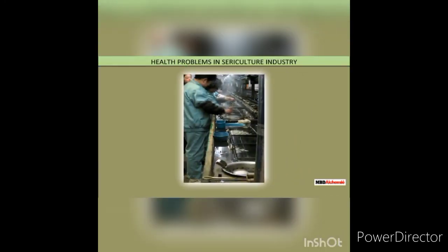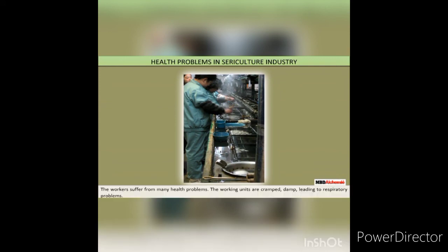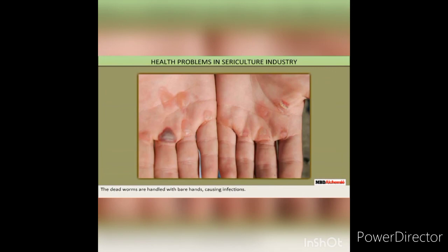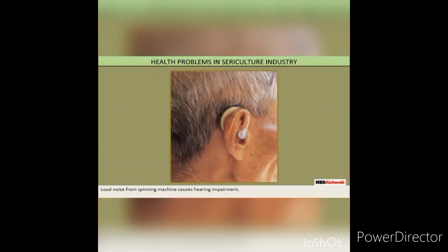Health Problems of Workers in Sericulture Industry. The workers in sericulture industry suffer from many health problems. The working units are cramped and damp, leading to respiratory problems. Inhalation of vapors from boiling cocoons leads to asthma. The dead worms are handled with bare hands, causing infections. Dipping cocoons in boiling water makes workers' skin raw and blistered. Loud noise from spinning machines causes hearing impairment.